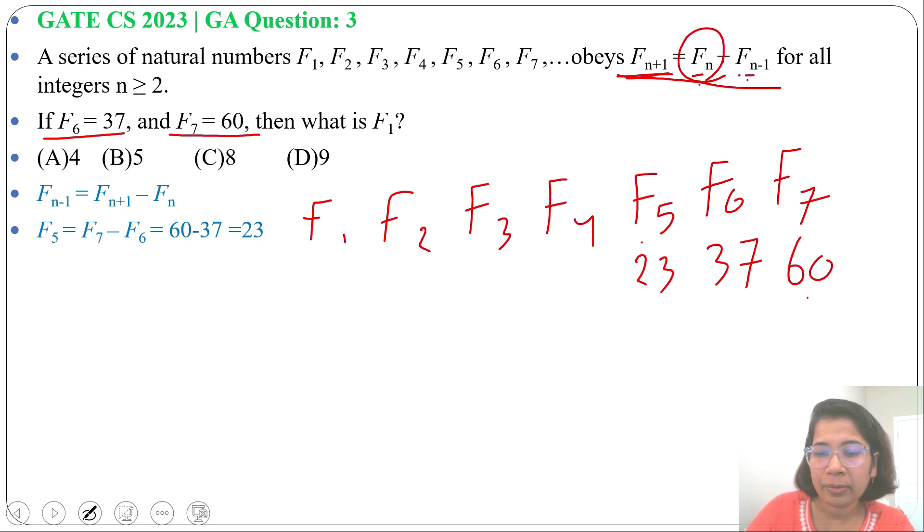Now f(4) will be f(6) - f(5), so 37 - 23 = 14. Next, f(3) = f(5) - f(4) = 23 - 14 = 9.